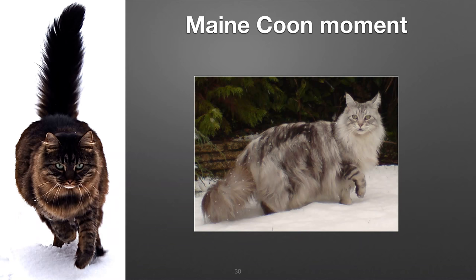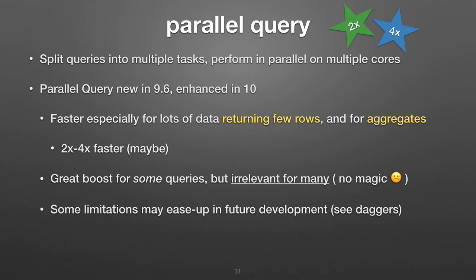Next break — these are Maine Coon kitties. A friend just recently told me about them — they're gigantic cats. They're supposed to be really nice cats and they are from Maine, the state of Maine. They grow ginormous — there are pictures on the internet of people with two arms and a cat falling off each side. So, parallel query.